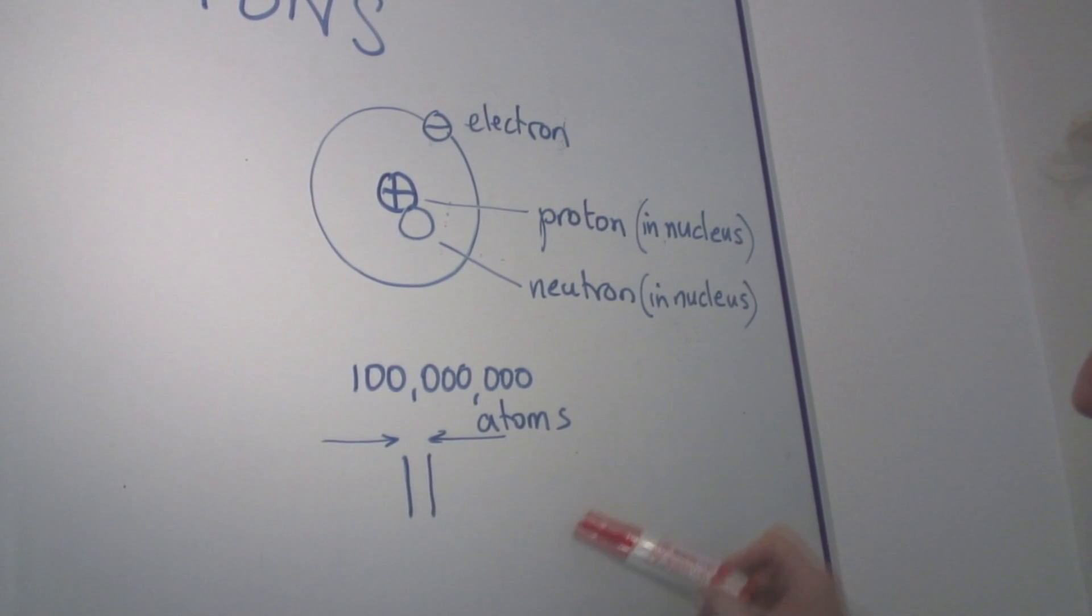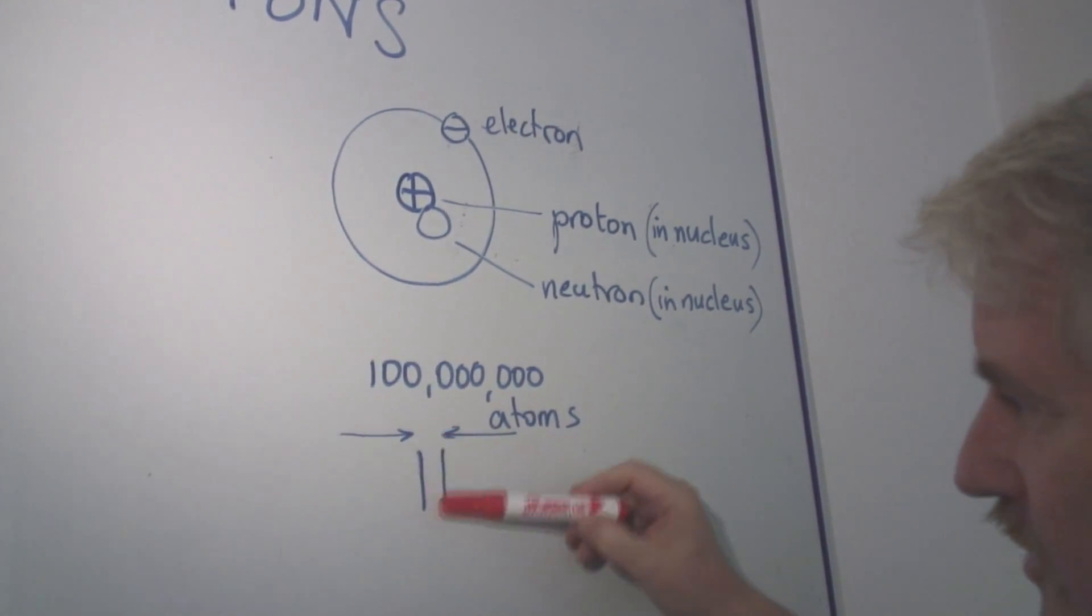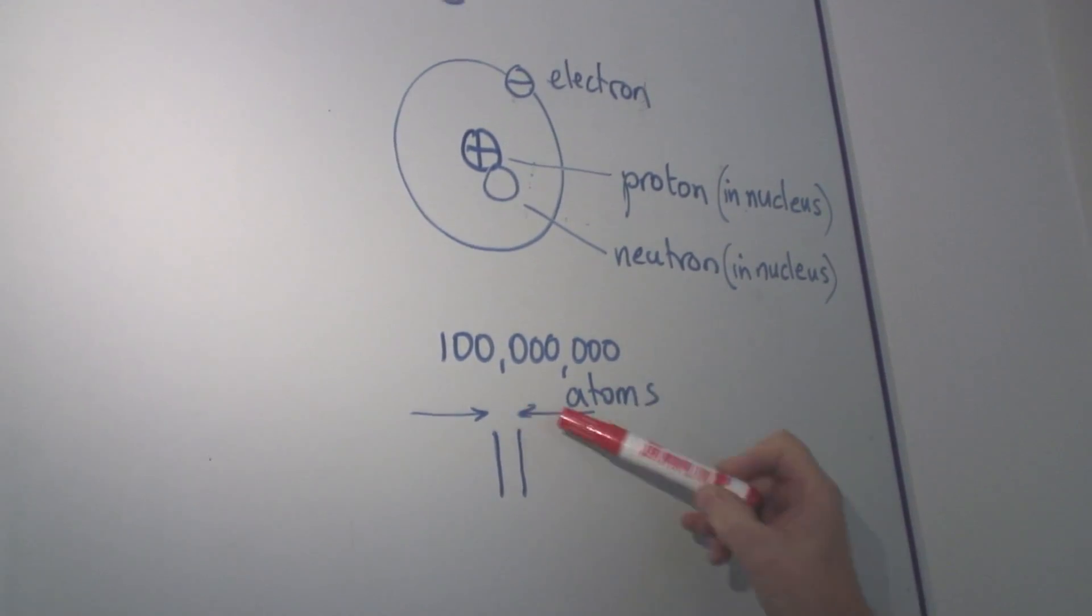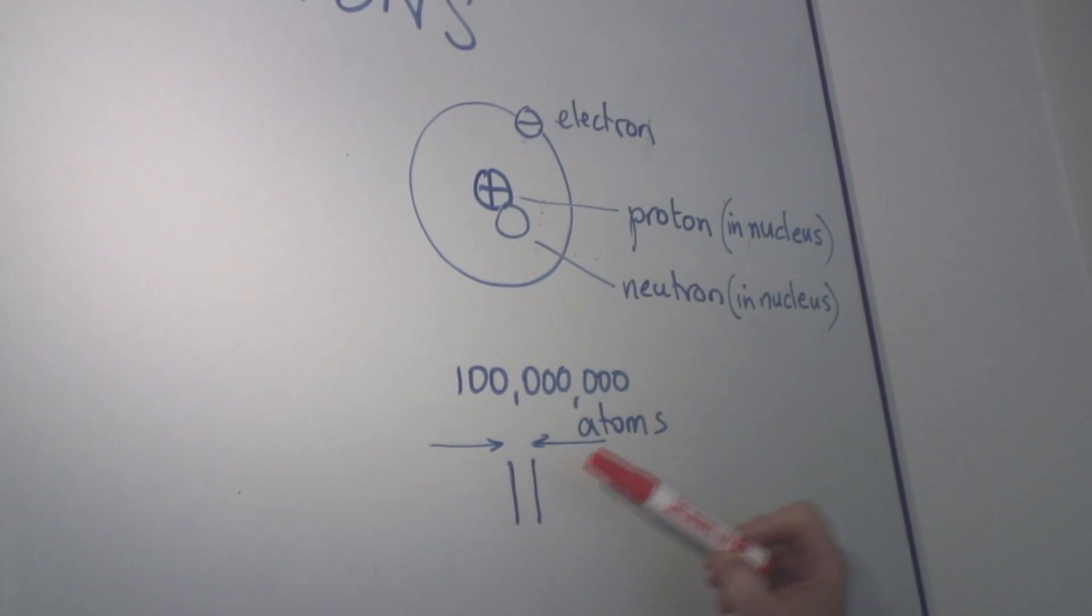Here's an idea of how big it is. There's two lines and there are a hundred million atoms between those two, end to end. Atoms are not big.